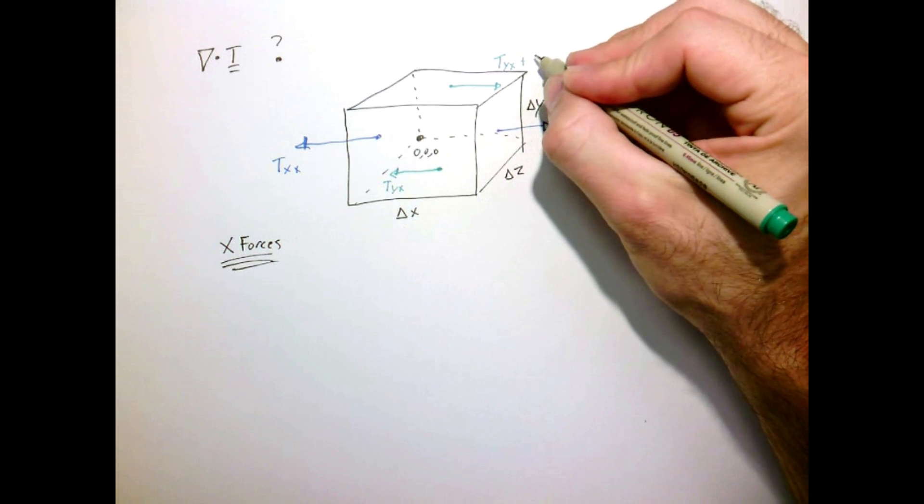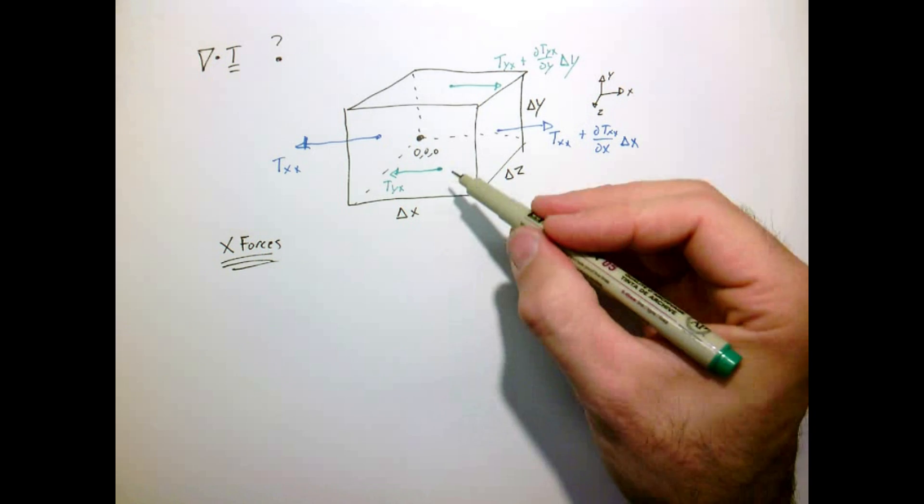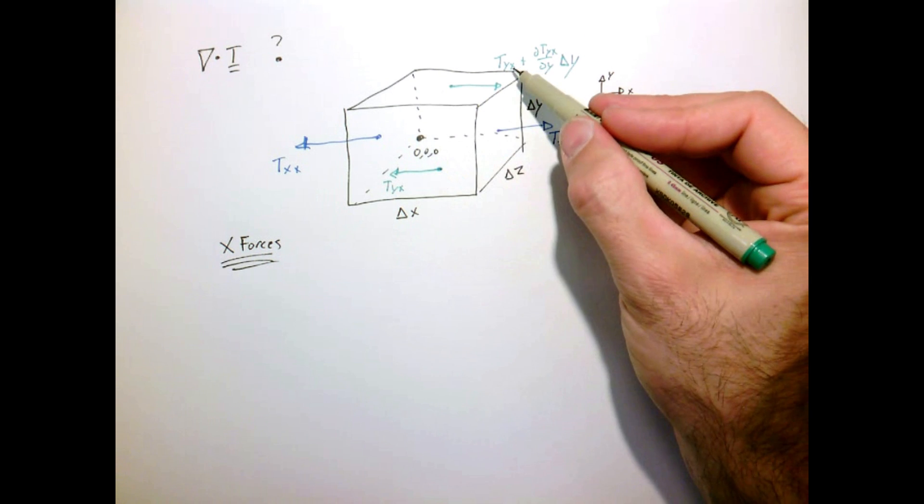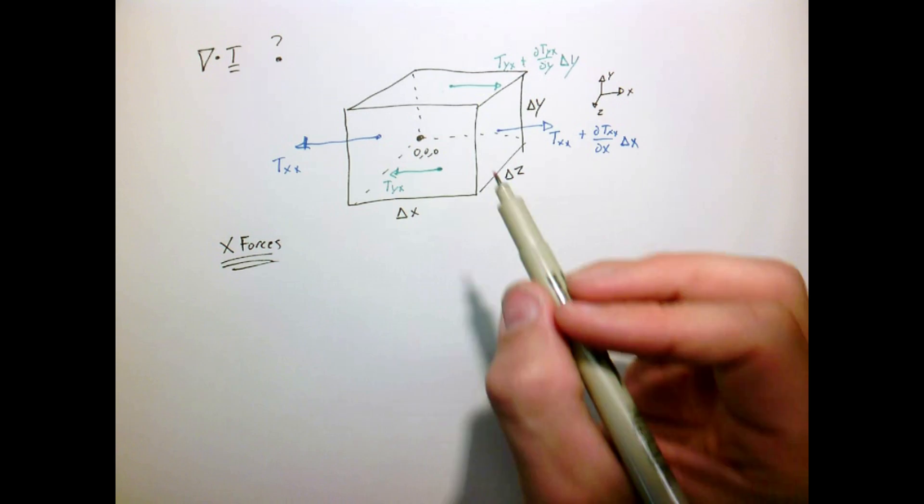And this one will be pointing that way. And likewise, if the stress tensor is not constant in space, it's gonna be given by the value here at zero, zero, zero, plus a little bit based on its gradient in the direction y. And then we're gonna have likewise for z. And now it's getting a little more cluttered to draw, but I'll draw it anyway.